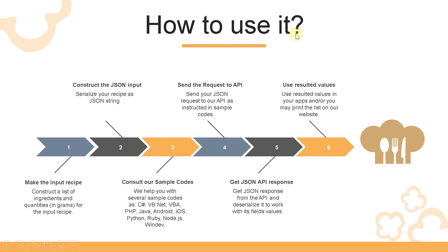How to use it. First, make the input recipe: construct a list of ingredients and quantities for the input recipe. Second, construct the JSON input: serialize your recipe as a JSON string. Third, consult our sample source codes — we help you with several sample codes such as C#, VB.Net, VBA, PHP, Java, Android, iOS, Python, Ruby, Node.js, and WinDev.